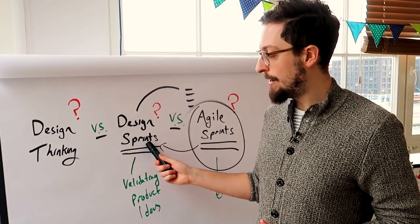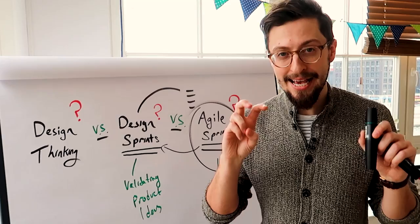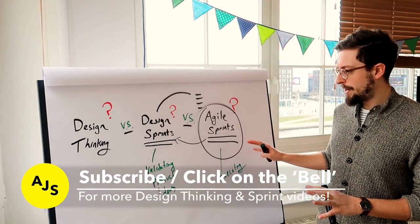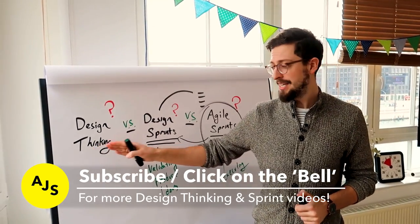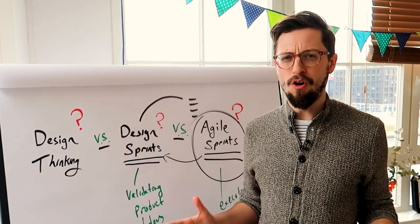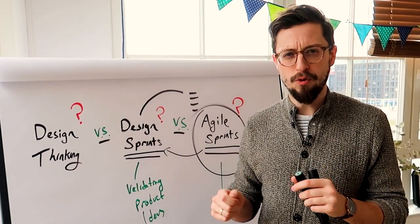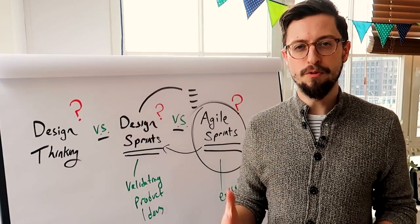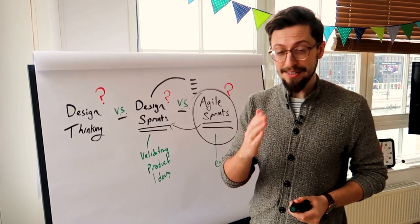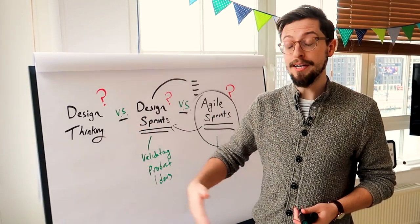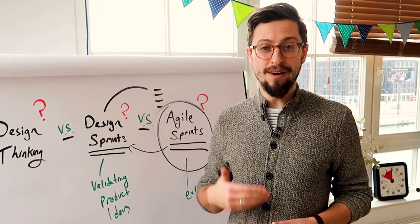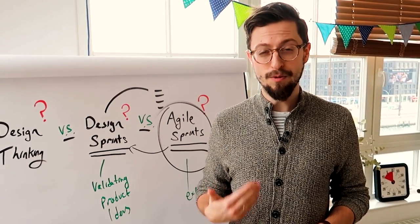So design sprints are a recipe — an applied execution of design thinking. Design thinking is your operating system: all the things you can do and pull from if you want to get the user perspective on a problem, even helping you find the problem. Design sprints are a recipe that helps you validate whether some ideas are right or wrong and also helps you come up with ideas. Agile sprints are for when you're actually ready to execute and create something within a company.